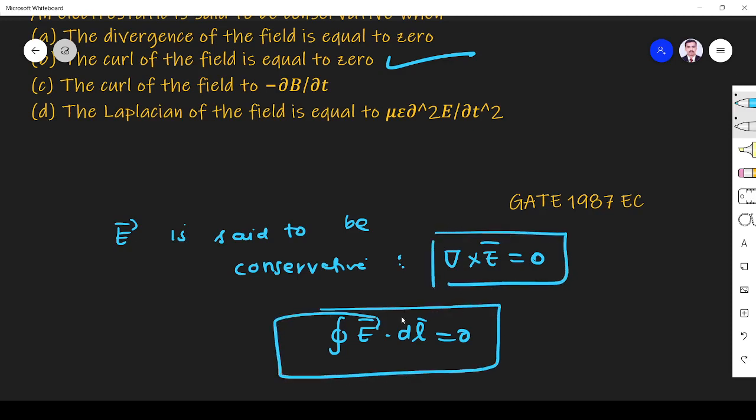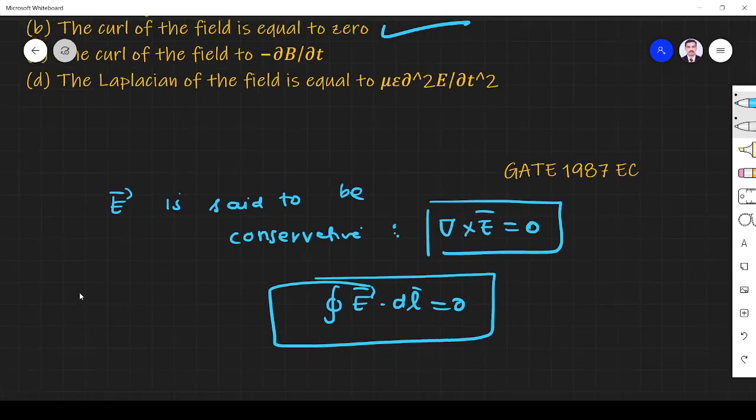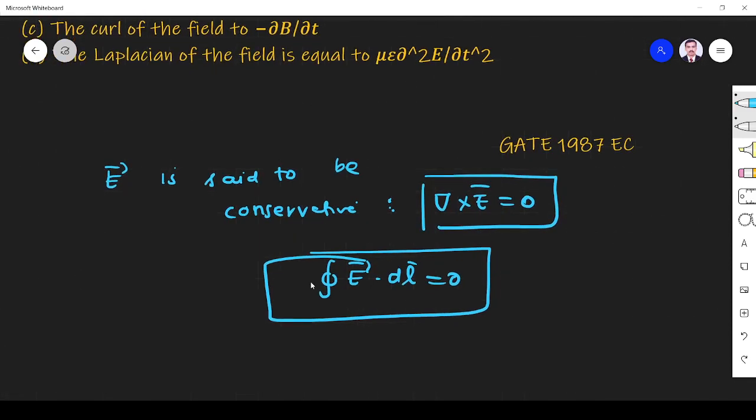In integral form, it's the closed integral of E dot dl equals zero. The closed integral indicates curl, so rotation is nothing but curl.